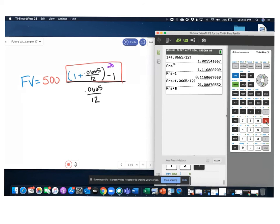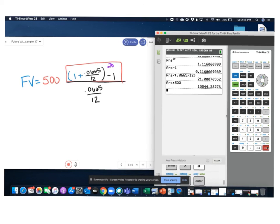And finally, I multiply that by 500, and I'm going to come up with this value. And so my future value at the end of all this is equal to $10,544.38.